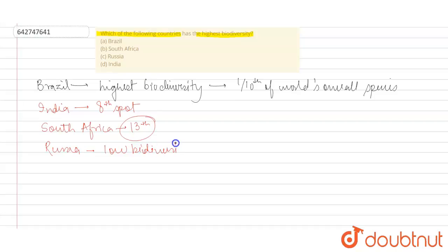So the country with highest biodiversity is Option A: Brazil. So Option A is the correct option. I hope this answers your question, students. Thank you.